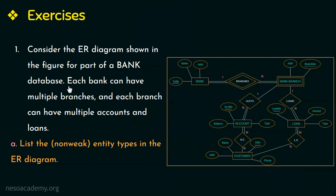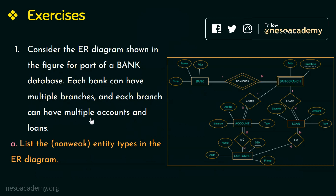Each bank can have multiple branches, and each branch can have multiple accounts and loans. This figure is the ER diagram of a bank database. Based on this ER diagram, let us see a few questions. The first question is: list the non-weak or strong entity types — entity types that are not weak — in the ER diagram.